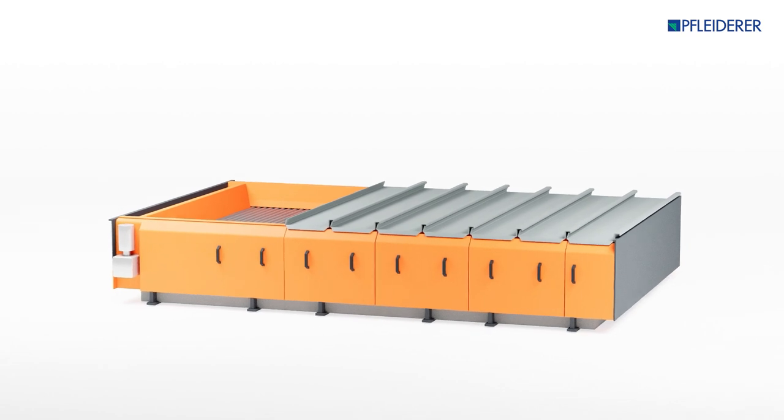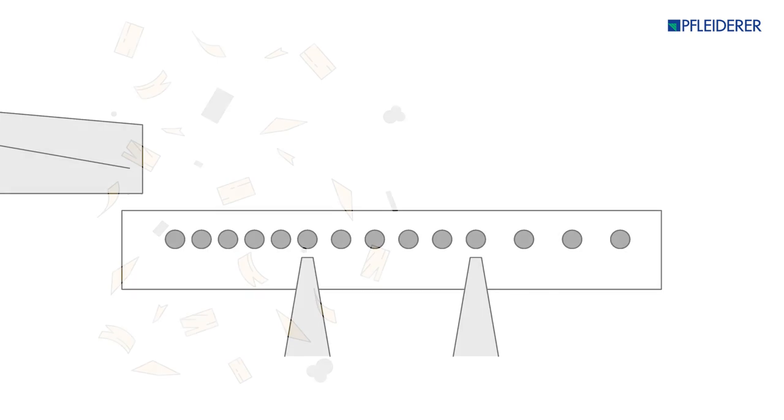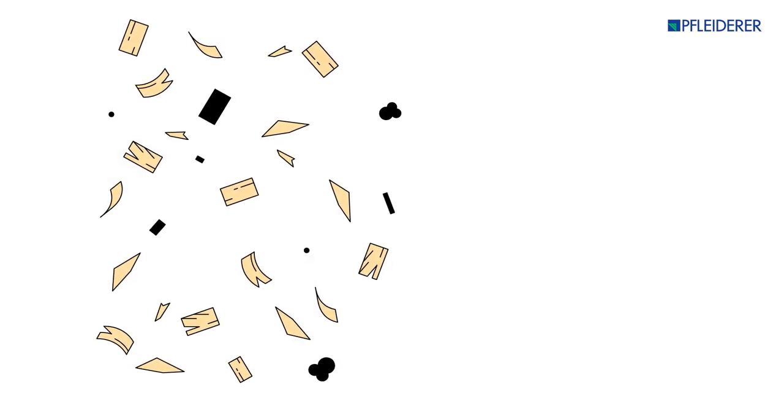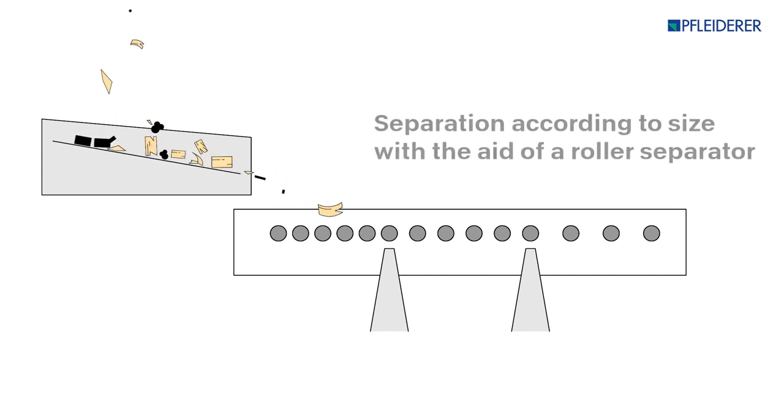Fleiderer sources its recycled wood from regional suppliers near its production sites. It is supplied pre-cleaned and separated according to size at the start of the treatment process.